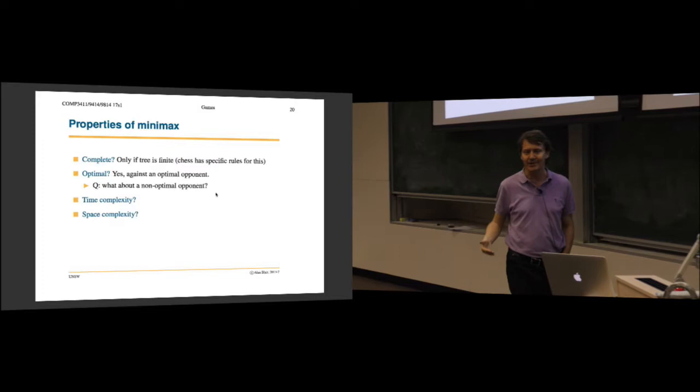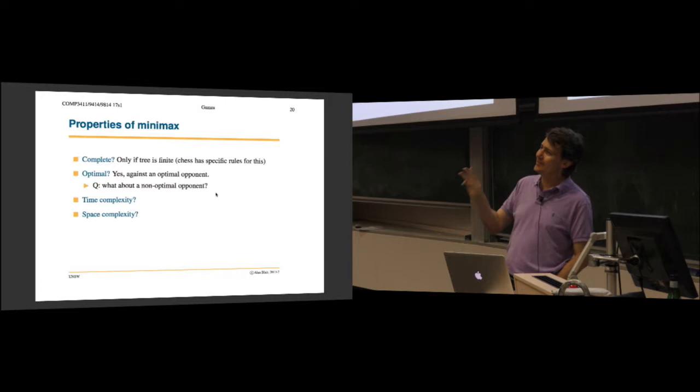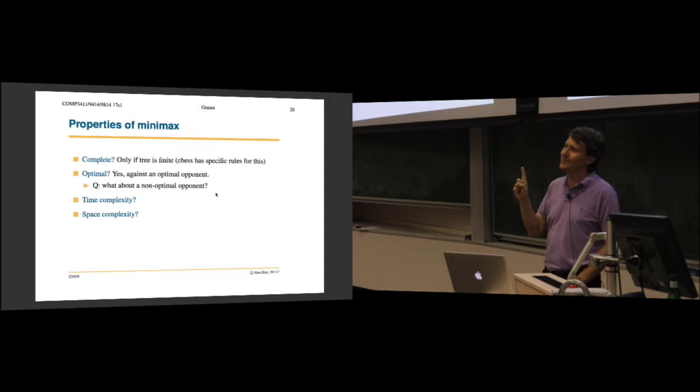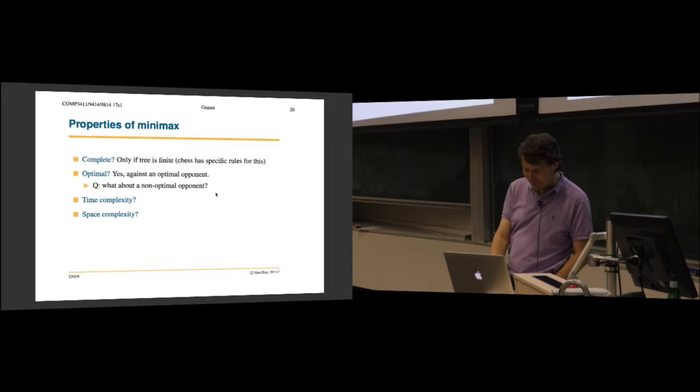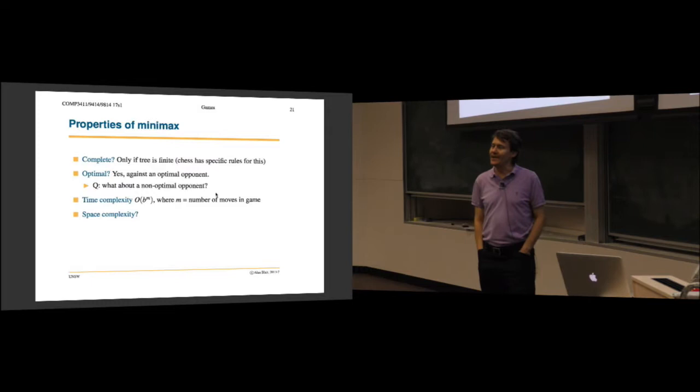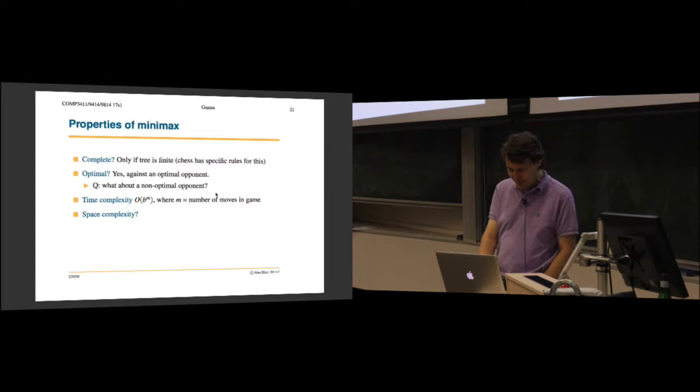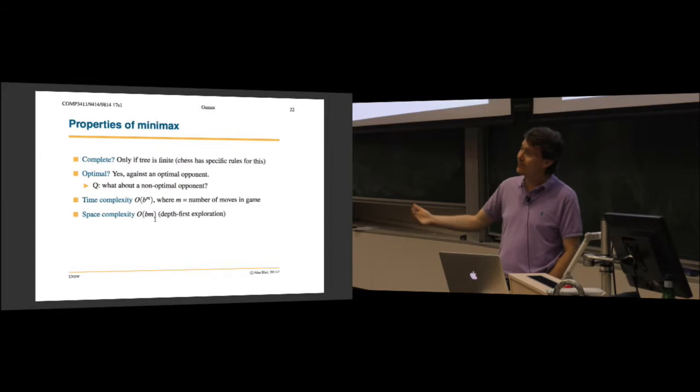And one of the tutorial questions next week, or one of the exercises, is to actually think about tic-tac-toe. So you've got three choices in tic-tac-toe. You can go in the center, on the edge, or the corner. If you assume the opponent is perfect, then all three are equally good. If you assume the opponent can make a mistake, it turns out that one of those moves is much better than the other two. So have a think about that and why that is. Time complexity, b to the m. So what is m here? Well, it's the number of moves in the game, which could be very large. And the space complexity is good. It's b times m because it does depth first. We talked about how depth first search doesn't have to keep too much in memory.